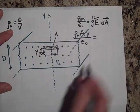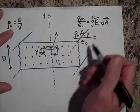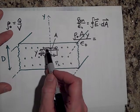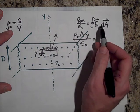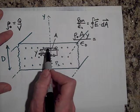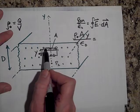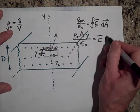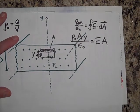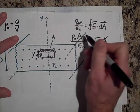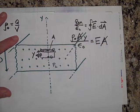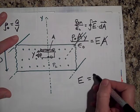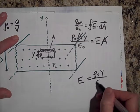That equals the flux integral. We can get rid of the dot product because the only place where there's flux, dA is in the same direction as E. We can pull E out of the integral because E is the same at every location across the top surface. When we add up all the dA's we just get A. Canceling the area A from both sides, the electric field is E = ρ₀ y / ε₀.